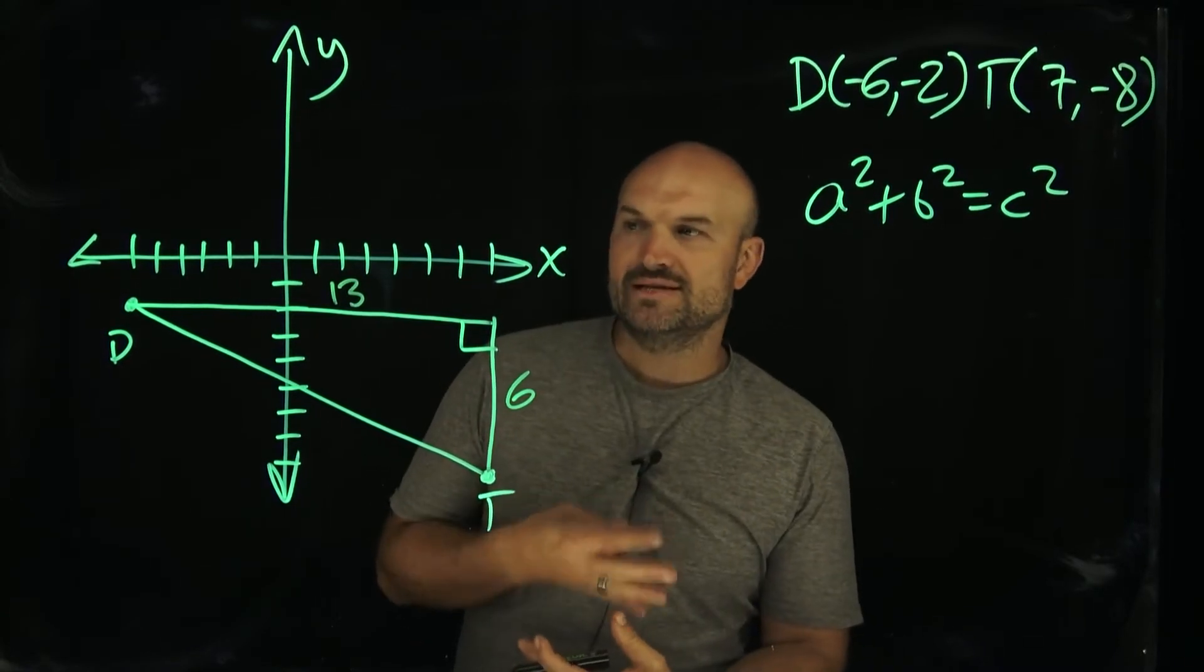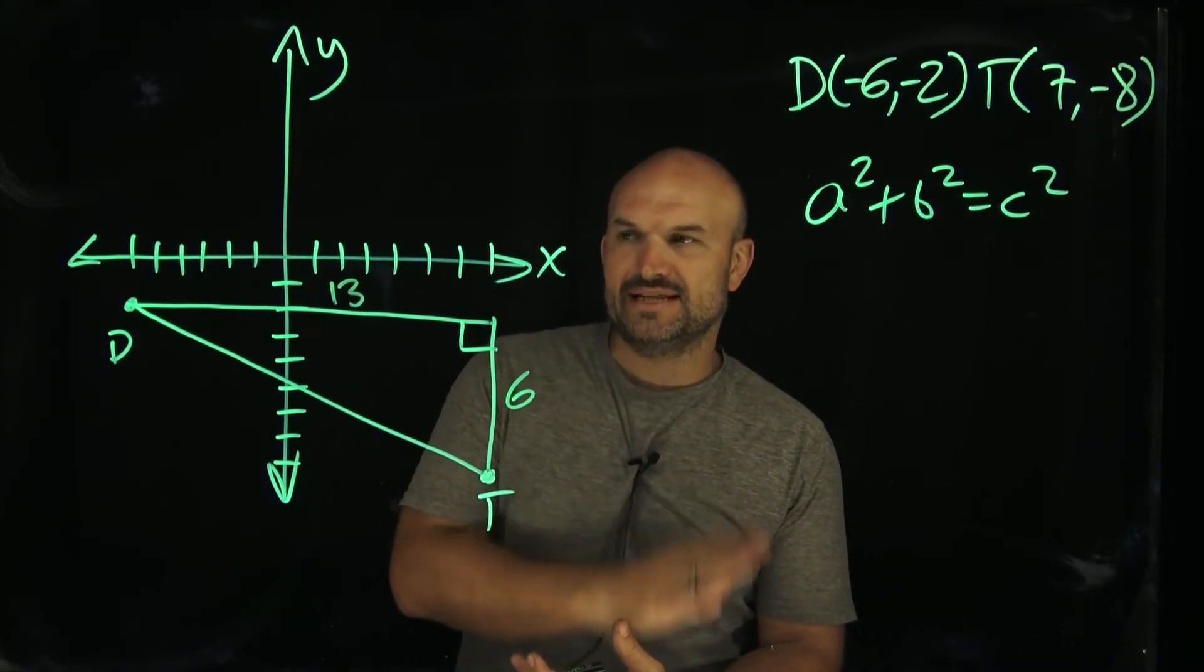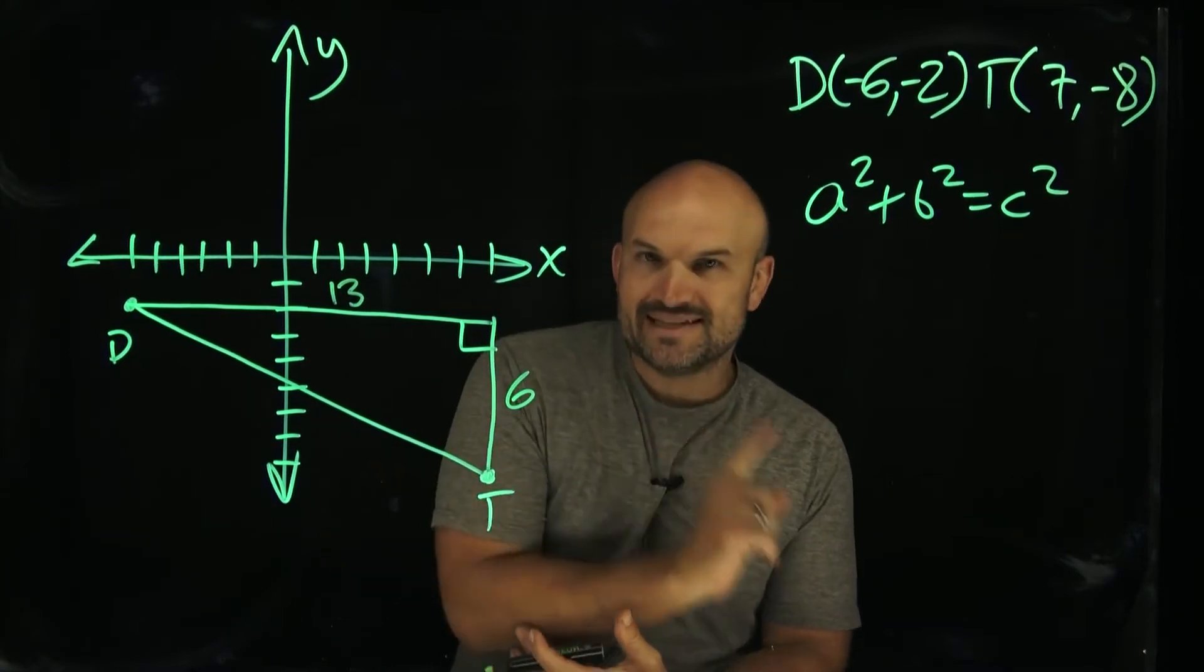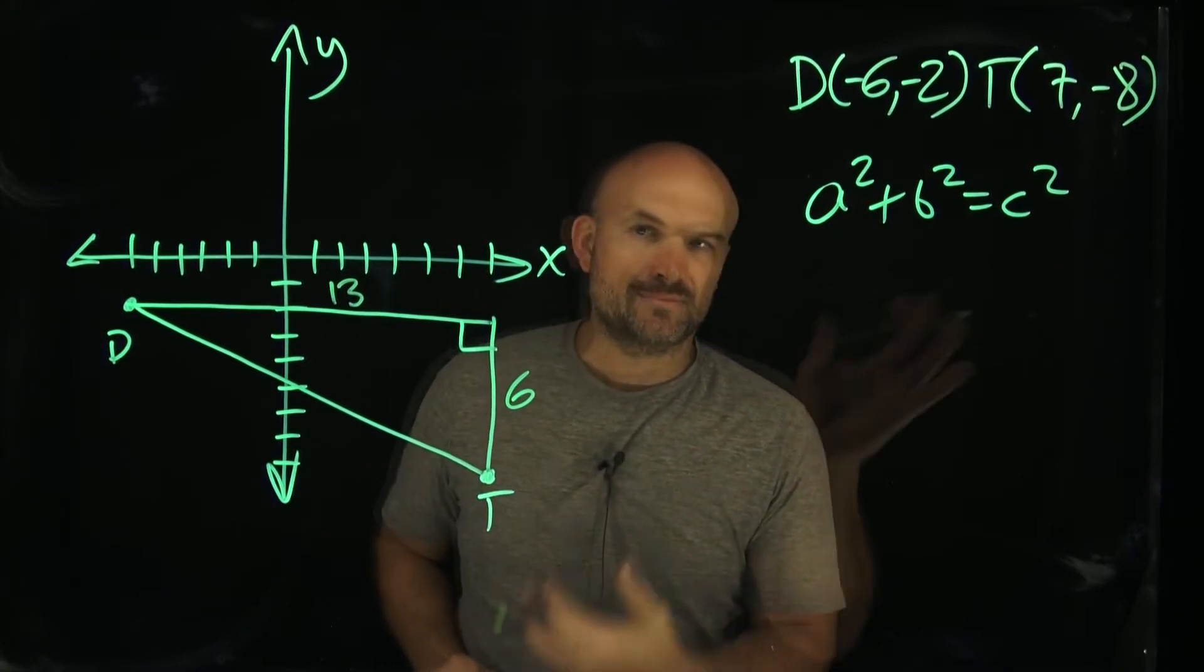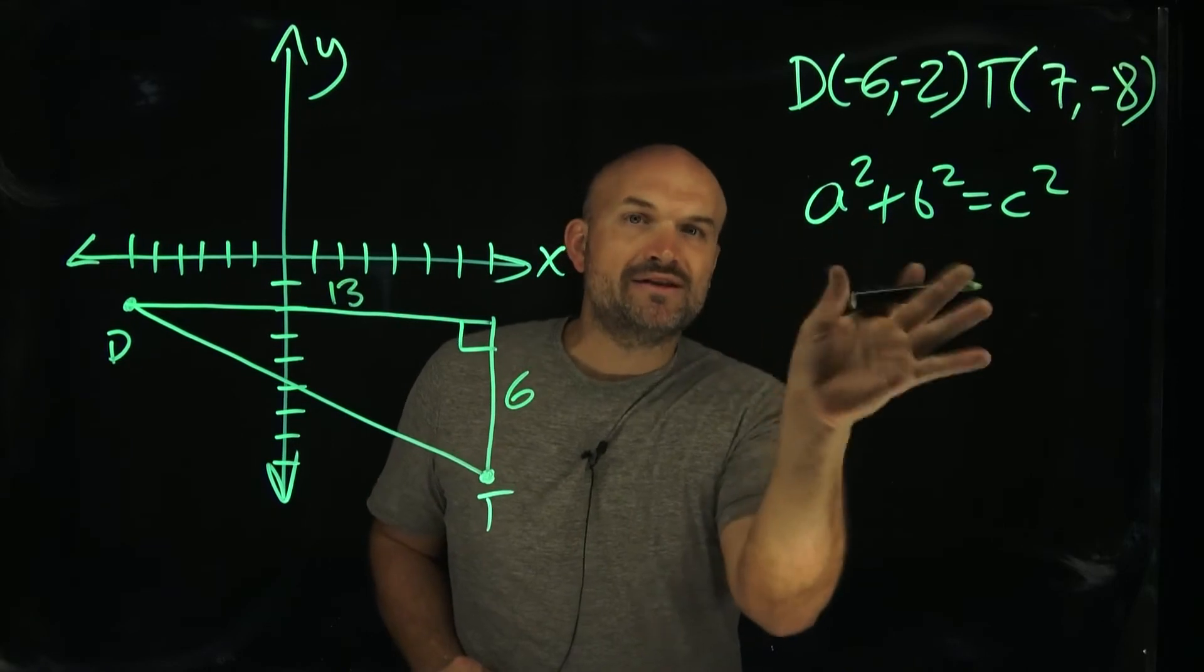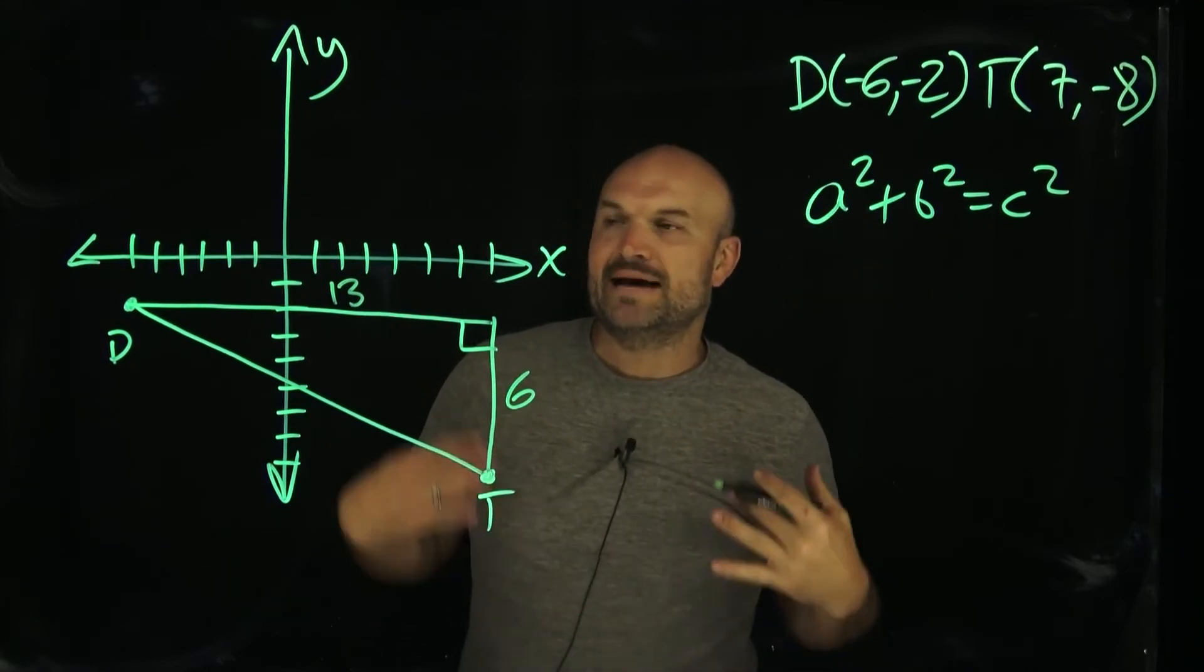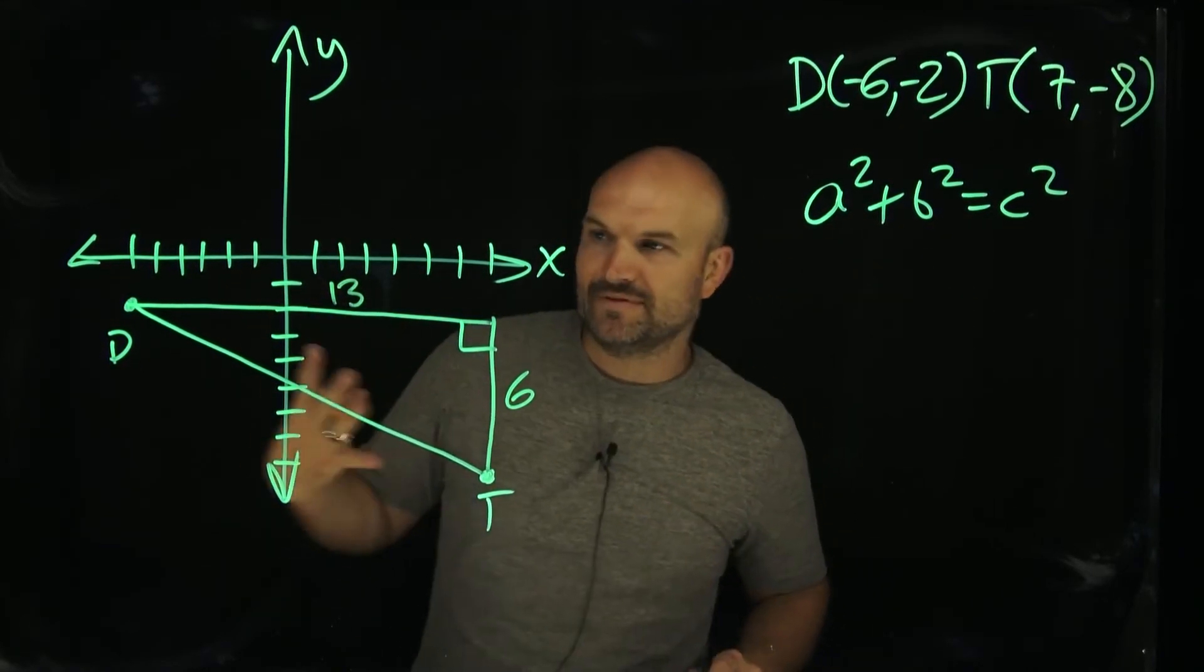when we're doing the distance formula, sometimes we do get a negative distance. But again, that's because we're dealing with distance and direction. And guess what, the distance formula, as well as the Pythagorean theorem, it counteracts that. We're going to be squaring those values. So therefore, we're always going to get that positive distance. We're not going to be worrying about the direction in this case.